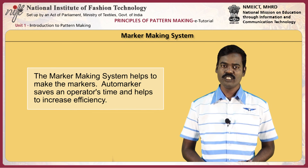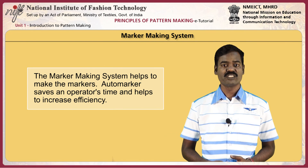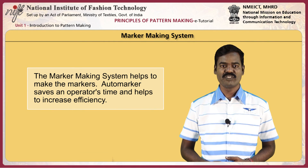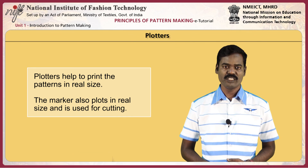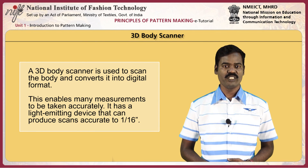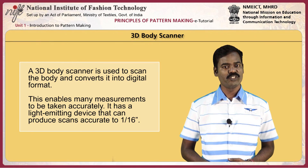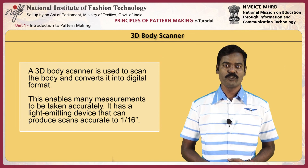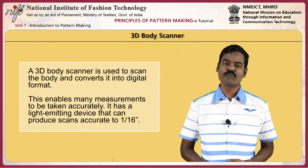The marker making system helps to make markers. Auto-markers save a lot of time, and the operator helps to increase efficiency. A plotter helps to print patterns in real size, and the marker is also plotted in real size and used for cutting. The 3D body scanner is used to scan the body and convert it into digital format, enabling many measurements to be taken accurately. It has a light-emitting device that can produce scans accurate to 1/16 inches.